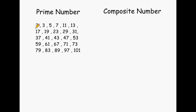2 is the only even prime number in existence. 3 is a prime number because you can only multiply 1 times 3 to produce 3. Same thing with 5, 7, 11, and 13, as well as the rest of the numbers upon the screen.